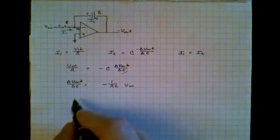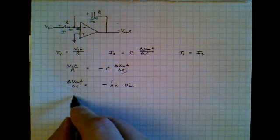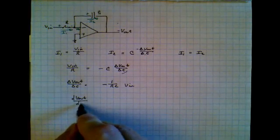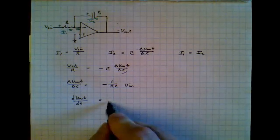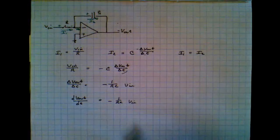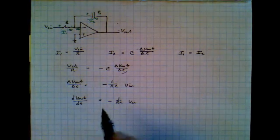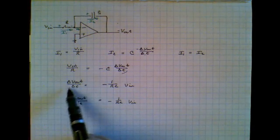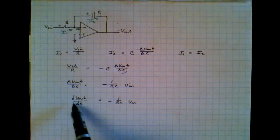Now this side, if one was a mathematician, would be written as dVout divided by dT is equal to minus 1 over RC Vin. But typically for electronics engineering students, it's a lot easier to start off by using just a little delta, rather than the much more formal dTs.